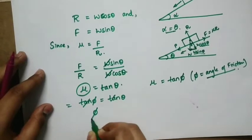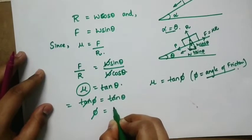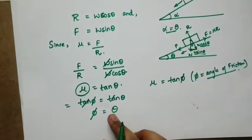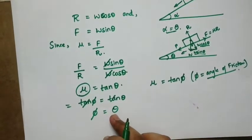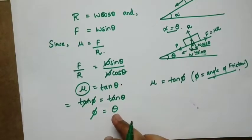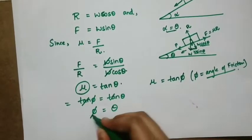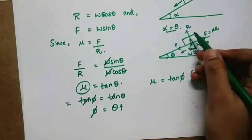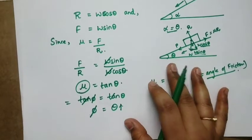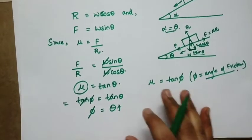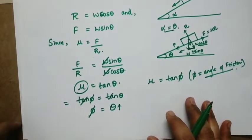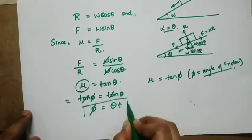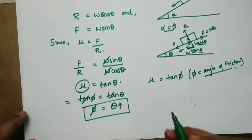The tan terms cancel, so the angle of friction equals the angle of repose. Theta is the angle of repose, defined as the maximum angle of the inclined plane at which a body can remain in equilibrium entirely by the assistance of friction.